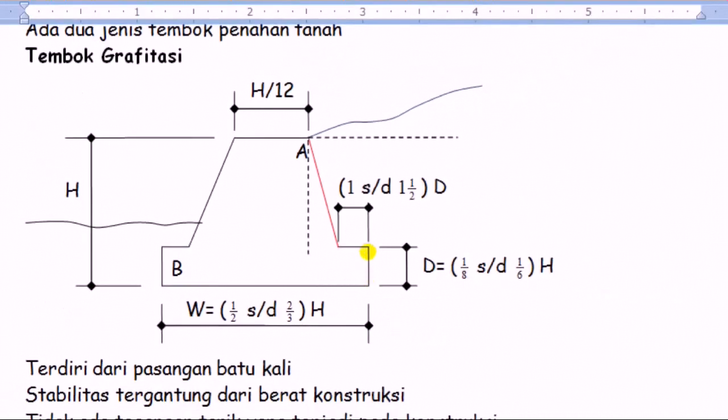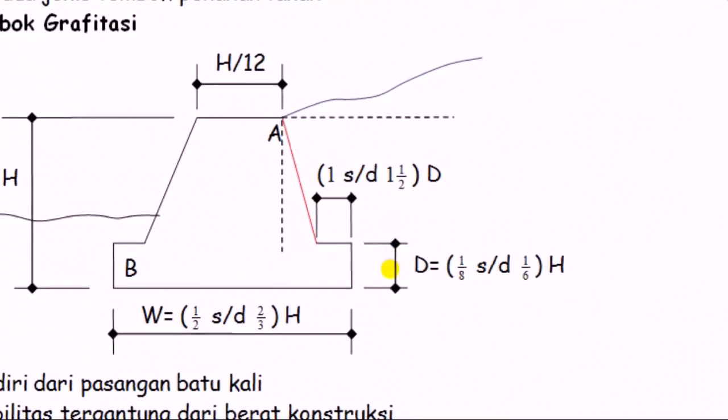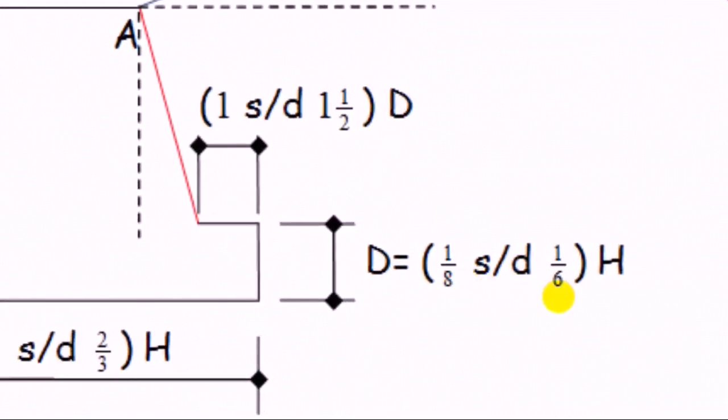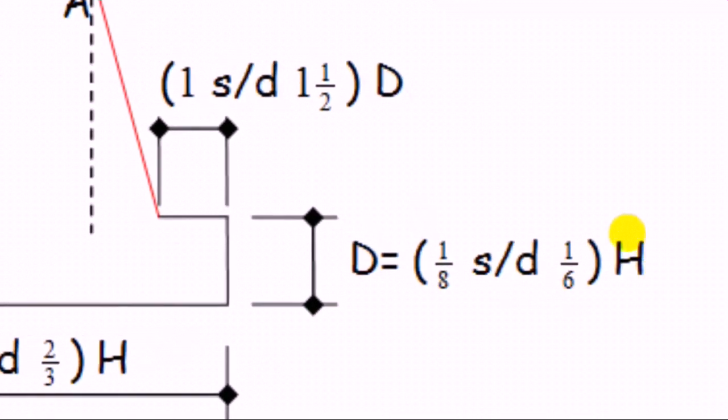Kemudian kalau kita mau ada platnya, ada semacam plat. Ini tebalnya D ini adalah 1 per 8 sampai dengan 1 per 6 dari tinggi tembok.